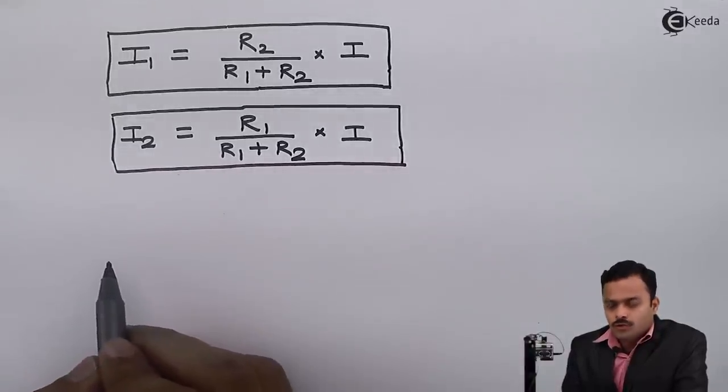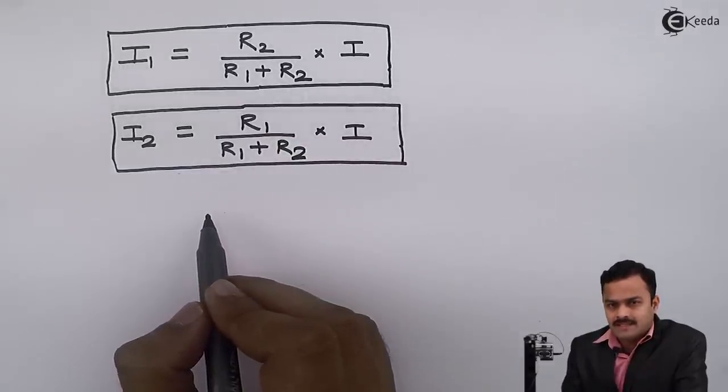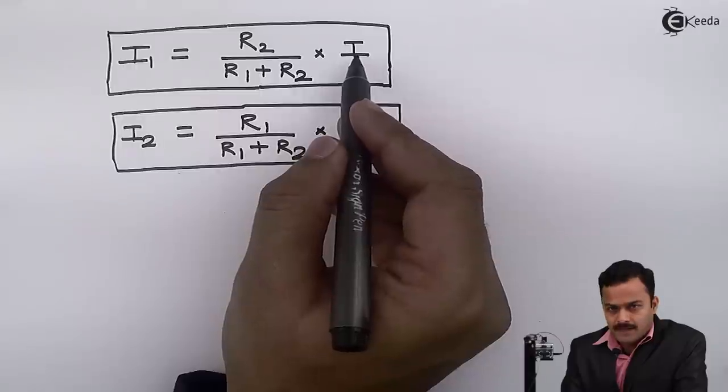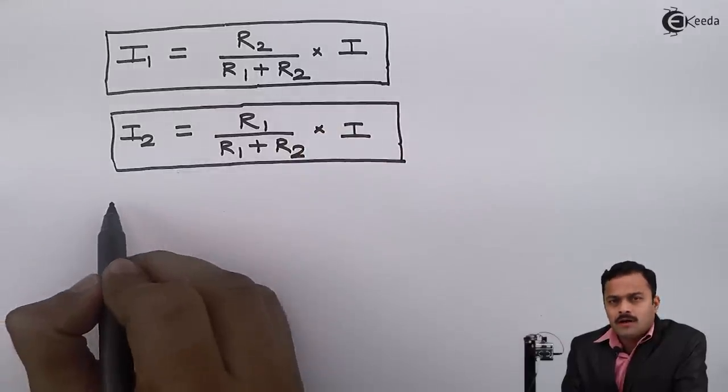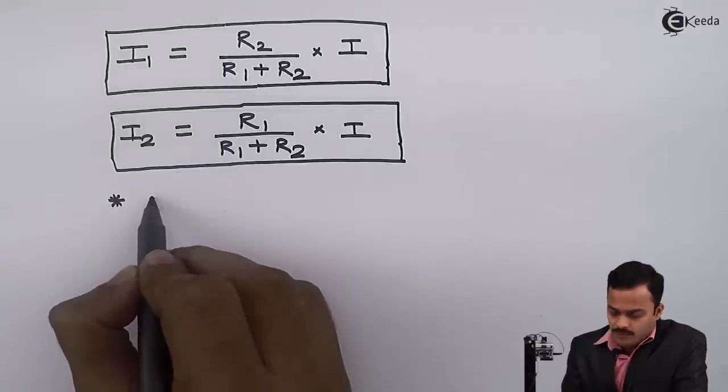So we can use these two formulae in order to get current flowing through individual resistors if I know both the values of resistors and total current supplied. Some important observations: it is only applicable for parallel circuits.